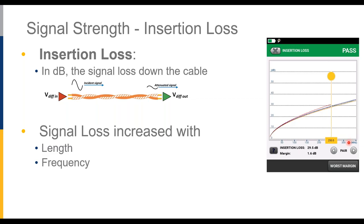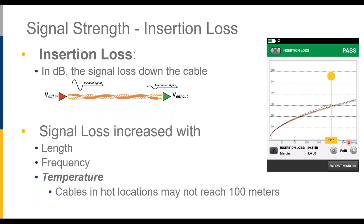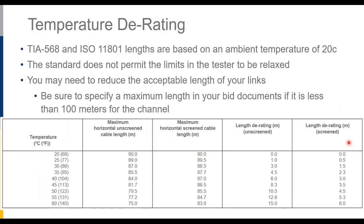Something that kicks in especially in industrial environments: signal loss also increases with temperature. The 100-meter maximum is contemplated at room temperature — 68°F — and as temperatures get higher, you need to derate or reduce the cable length to compensate for additional insertion loss. One real example: cabling tested fine, the oven was turned on, and there seemed to be a cabling problem. The oven had to be turned off to get close and test again. Make sure you know what temperature the cable is going to operate at.